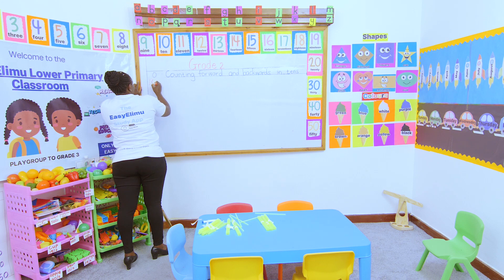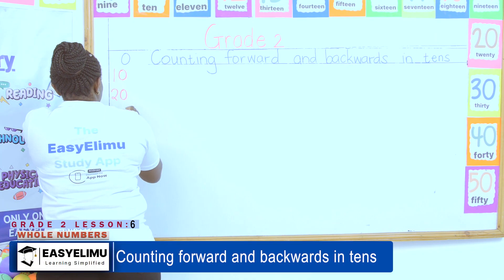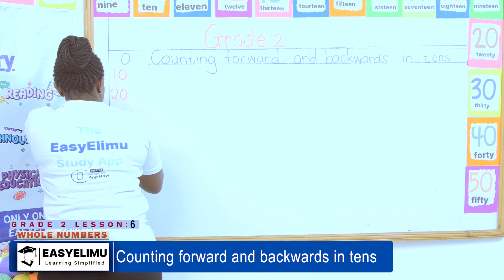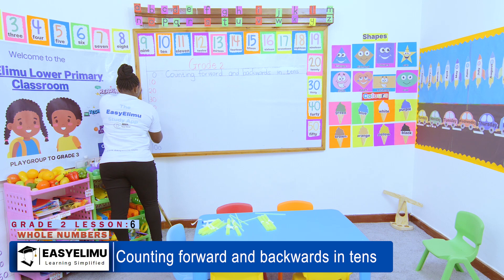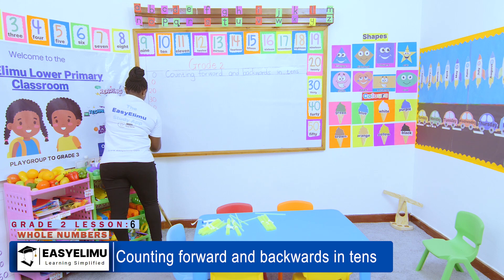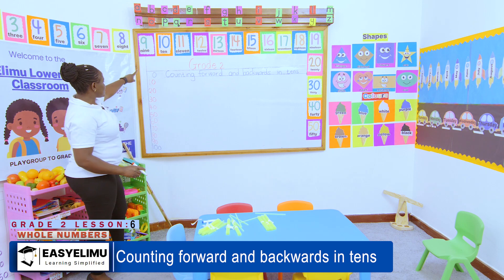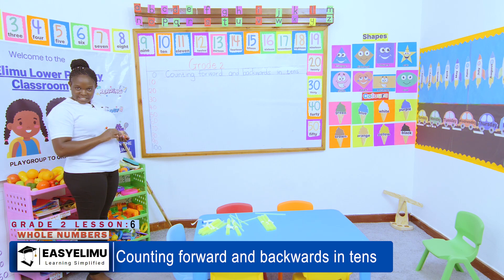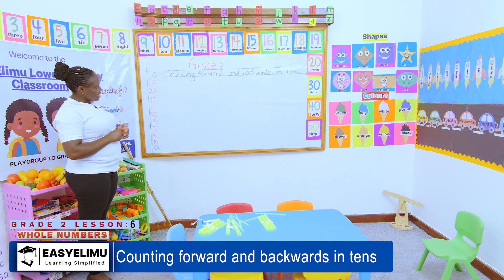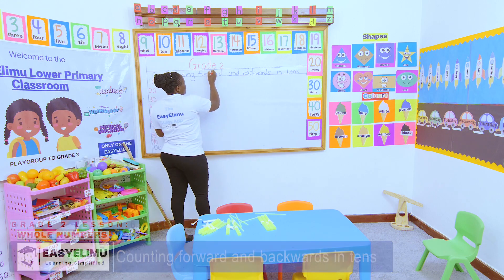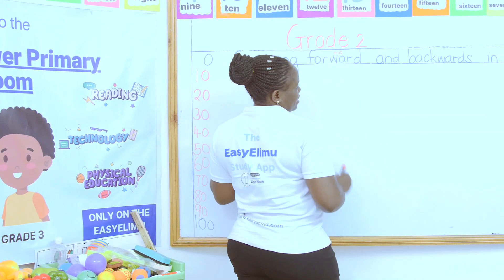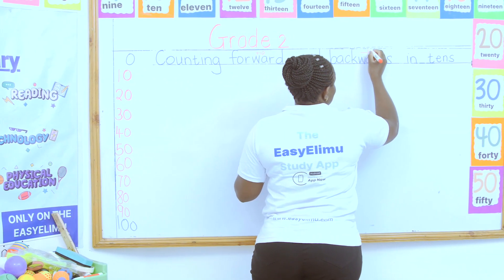10 is a ten, 20 is a ten, 30 is a ten, 40 is a ten, 50 is a ten, 60 is a ten, 70 is a ten, 80 is a ten, 90 is a ten. These are the numbers we call tens. Are we together? Forward means plus 10. Backward means minus 10.